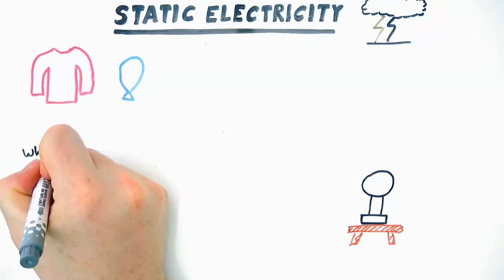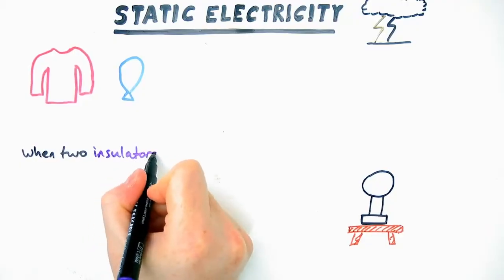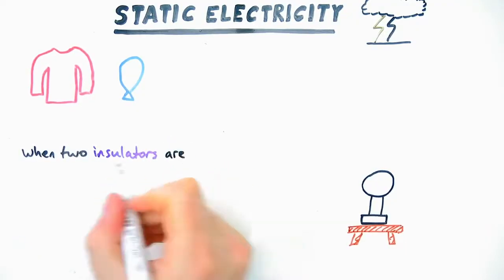What do a trampoline, a thundercloud, and a Van de Graaff generator have in common? Well, they can all give you an electric shock. Being able to understand why involves understanding static electricity.